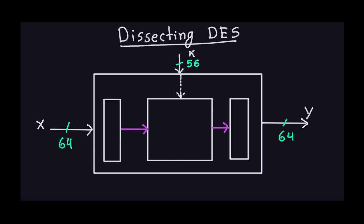Remember what DES is: this is a block cipher that takes 64-bit blocks of plain text and transforms them into ciphertext, which is also 64 bits. The key for this DES encryption algorithm is 56 bits.